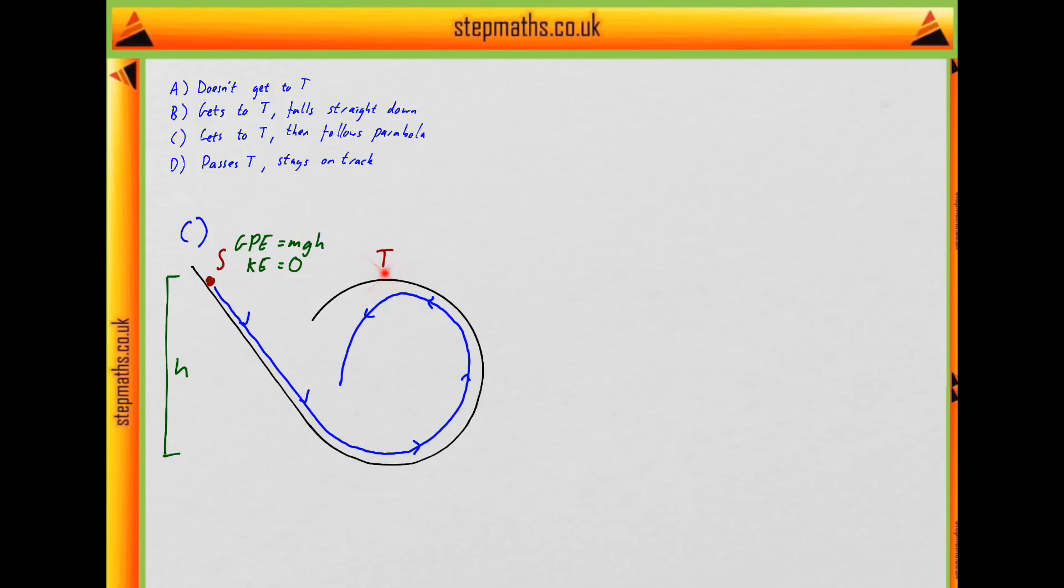And T is at the same height. What does that mean? Well, it means the GPE is the same. And because energy is conserved, what does that mean? That means the kinetic energy has to be the same as well. But that would mean it would have zero speed at this point. But if it follows this trajectory, it's moving through the point T to the left. And therefore it doesn't have zero speed. And that means we can actually rule out this case.